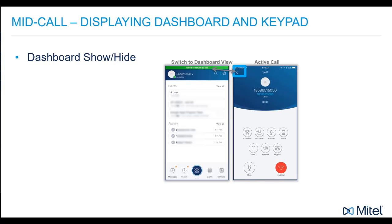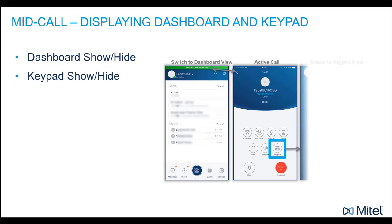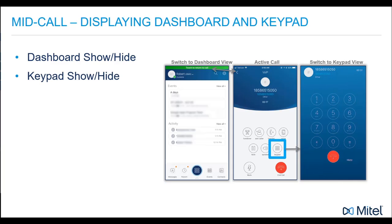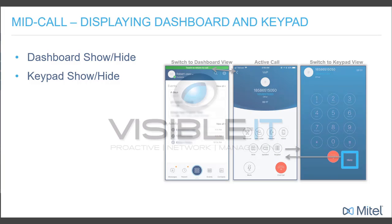If you need to send digits during the call, such as making a choice off of an auto attendant, press the keypad button at the keypad viewer and enter your digits. Then press the hide button to return to the active call display.